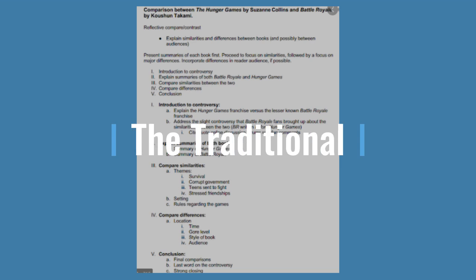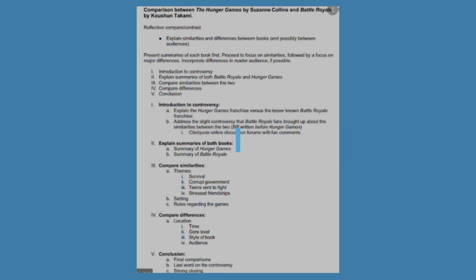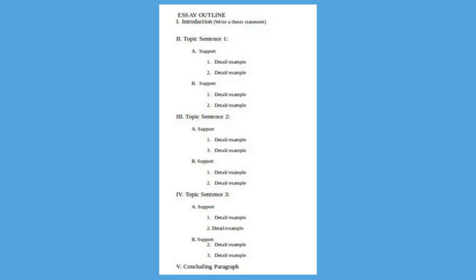Let's look at the traditional outline. The traditional features the thesis statement under Roman numeral one — your introduction. Subsequent Roman numerals would represent different topics that you would discuss in your essay. Each topic could be multiple paragraphs long, organized with subsequent Roman numerals, letters, and numbers.